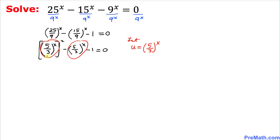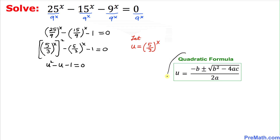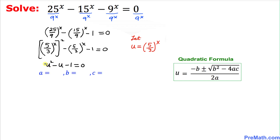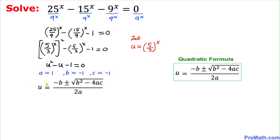Let u equal (5/3)^x. The whole equation then becomes simply u² minus u minus 1 equals 0, which is a quadratic equation in standard form. We can identify a = 1, b = −1, and c = −1, so we'll apply the quadratic formula.